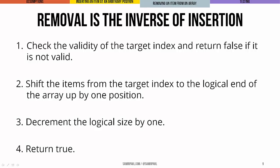Now, if we're going to remove an item from an array, we're essentially doing the inverse operation. We check to make sure that the target index is valid, and if it's not greater than zero or it's not less than the logical size, then we return false because that index is garbage. Then we'll do some shifting. This time we won't start at the logical end, we'll start at the target index. We want to shift the items from the target index to the logical end of the array up by one position. We'd decrement the logical size because we were losing an element, and we'd return true to show that the whole thing worked.